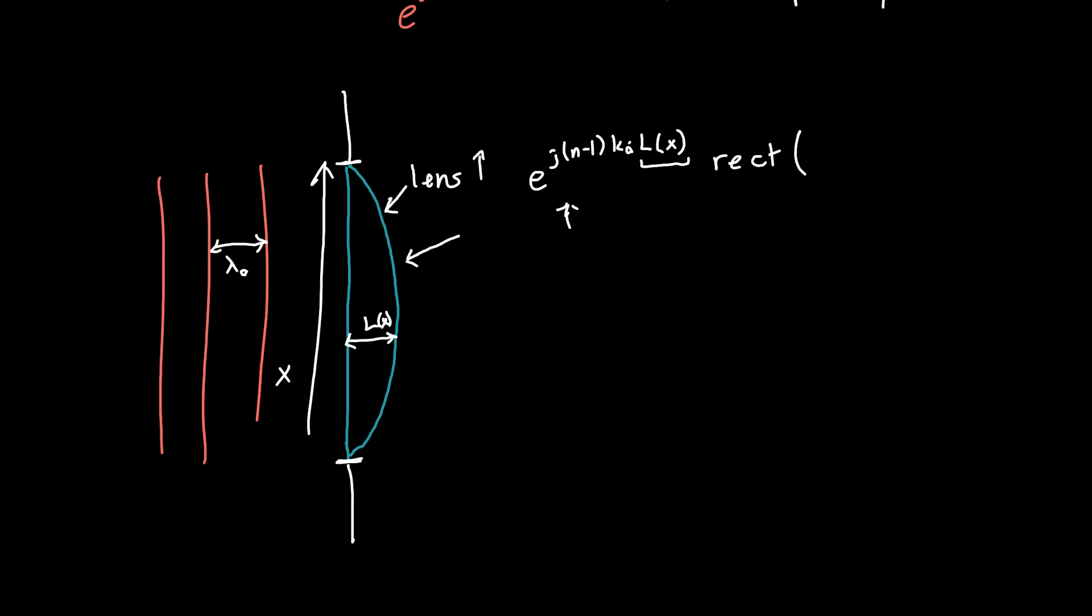And if you want to be super precise and say that this lens has a finite extent to it, or in general, any transparency has some finite extent to it, you can just multiply your newly found transfer function or your newly found phase delay by a rectangle. Let's say that this lens has diameter A, so some rectangle of X over A, or we're just multiplying graphically by this value, something that goes from 0 to A. And so this allows you to completely describe things like lenses, even when they have a finite length to them. And that's really cool.